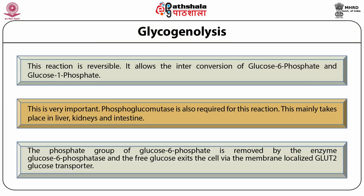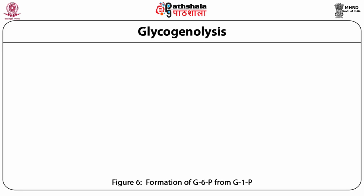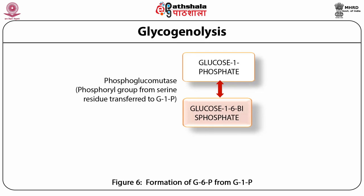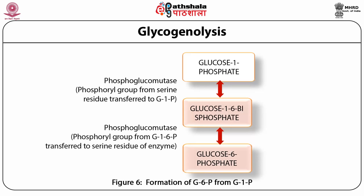The phosphate group of glucose 6-phosphate is removed by glucose 6-phosphatase, and free glucose exits the cell via the membrane-localized GLUT glucose transporter. As shown in the diagram, glucose 1-phosphate is converted to glucose 1-6 bisphosphate by phosphoglucomutase, with the phosphoryl group transferred from serine to glucose 1-phosphate; this intermediate is then converted to glucose 6-phosphate as the phosphoryl group is transferred back to the serine residue.